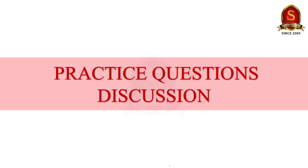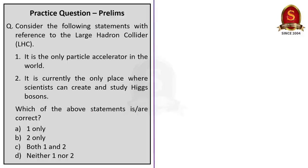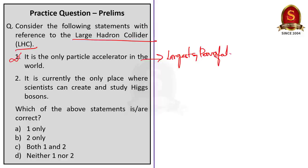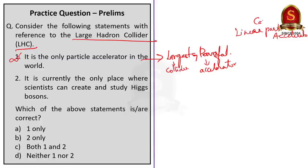Now for the preliminary practice question discussion. The first question is about the Large Hadron Collider. Statement 1 says it is the only particle accelerator in the world — this is incorrect. LHC is the largest and most powerful collider in the world, but not the only one. For example, the SLAC National Accelerator Laboratory in California is home to the longest linear particle accelerator in the world, and even India has accelerators like the Pelletron Superconducting Linear Accelerator at TIFR. Statement 2 says it is currently the only place where scientists can create and study Higgs bosons — this is correct.